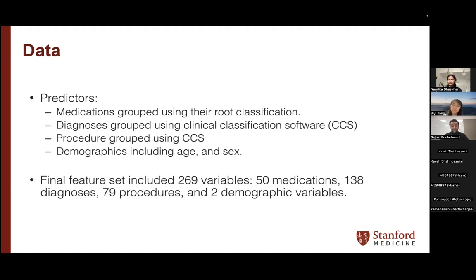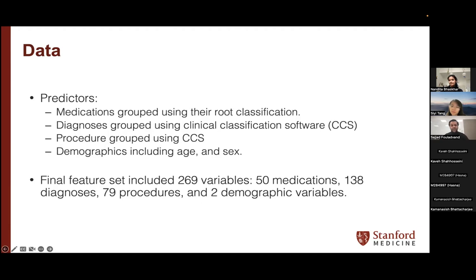Our final feature set used to train and test the models to predict opioid use disorder had 269 features or variables — I use those terms interchangeably. We used a multi-hot encoding. We didn't use dosage data — it's a binary variable that says if this patient has this diagnosis, yes or no, or have they been prescribed with this medication in this time period, yes or no. It's a multi-hot encoding.